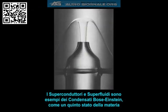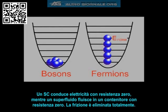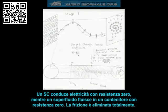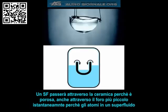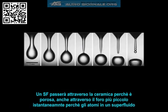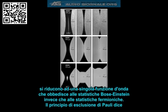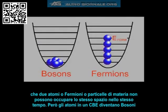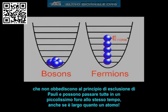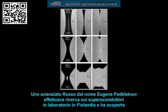Superconductors and superfluids are both examples of Bose-Einstein condensates, which is kind of like a fifth state of matter. A superconductor conducts electricity with zero resistance, while a superfluid flows through a container with zero resistance — friction is totally eliminated. A superfluid will flow through the tiniest hole instantly because all the atoms reduce to a single wave function, obeying Bose-Einstein statistics instead of fermionic statistics. The Pauli exclusion principle states that no two fermions can occupy the same space, but atoms in a Bose-Einstein condensate become bosons which do not obey this principle and can all fit through the tiniest hole simultaneously.